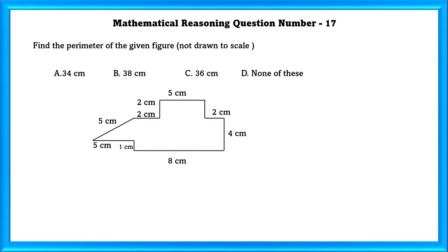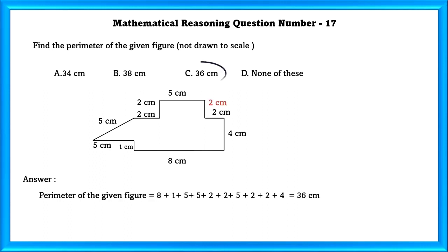Mathematical reasoning question number 17. Find the perimeter of the given figure, not drawn to scale. In order to find the perimeter, we need to find the missing lengths. After finding the missing lengths, we add all the sides to find the perimeter. Doing that, we will get 36 centimeters.